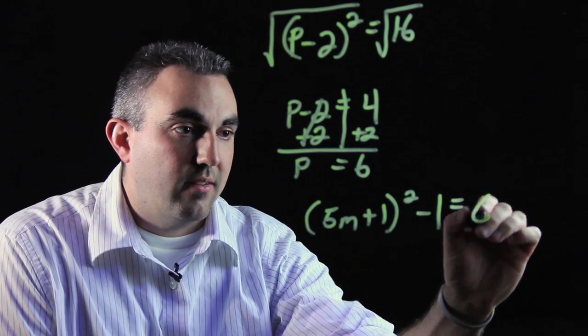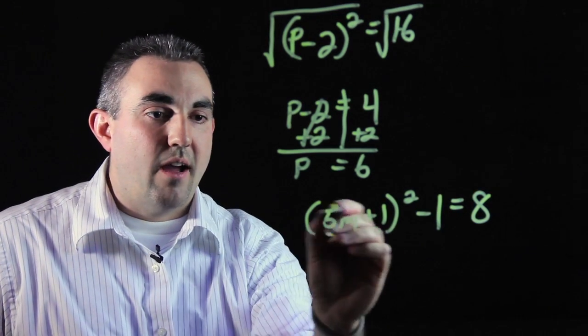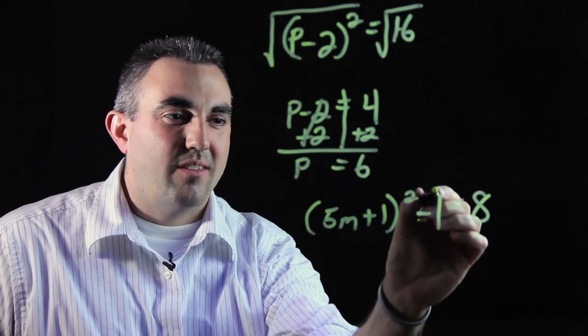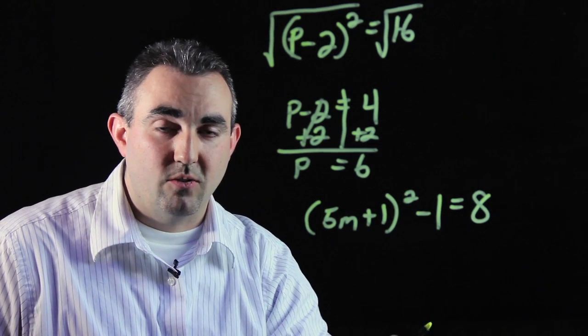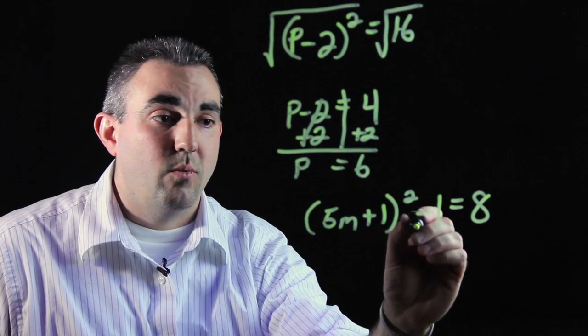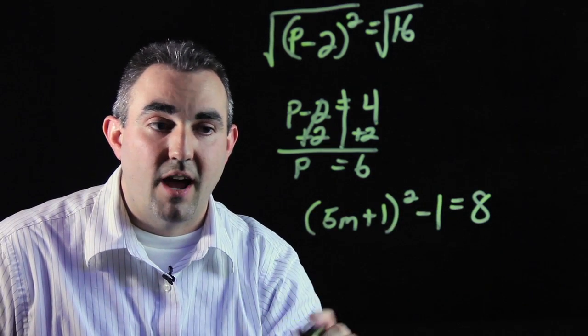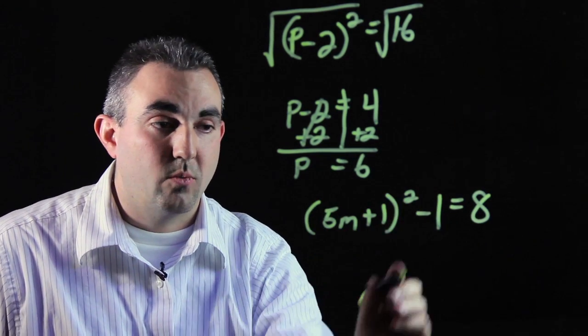This is one of those cases. In this case, we have a perfect square here but we have this extra minus 1 piece here. That means we are not ready to do the square root property yet. In order for us to be able to do this, we have to get this minus 1 onto the other side away from this perfect square.